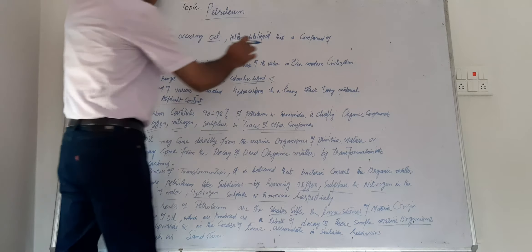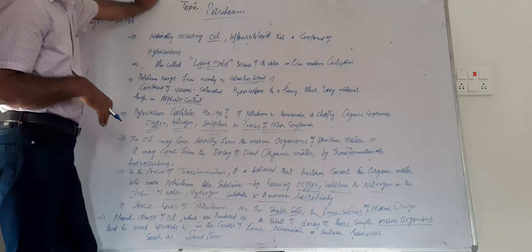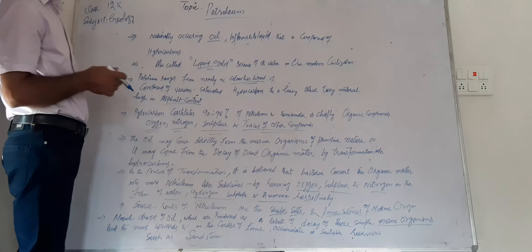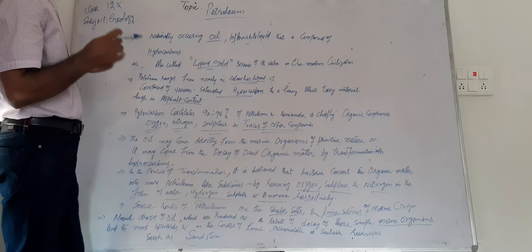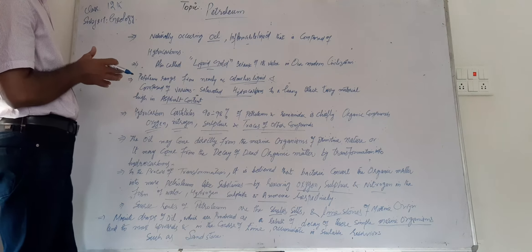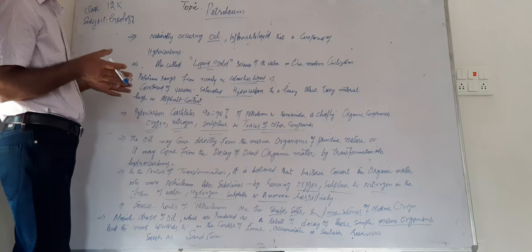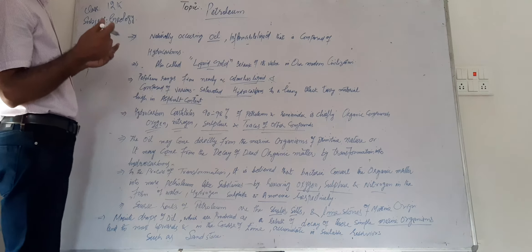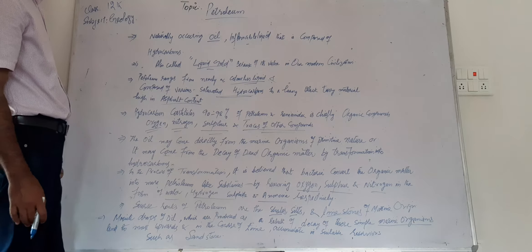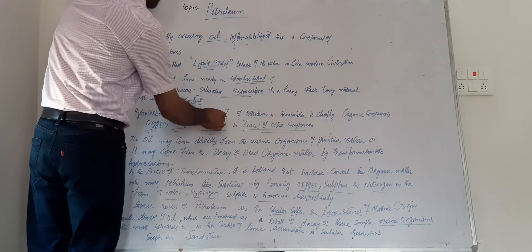Petroleum ranges from nearly a colorless liquid composed of various saturated hydrocarbons to a heavy black tarry material which has a very high asphalt content. Most of this petroleum is made up of saturated hydrocarbons.